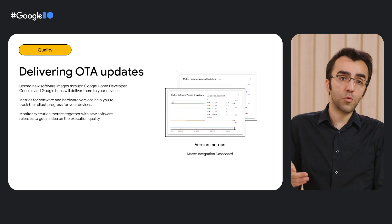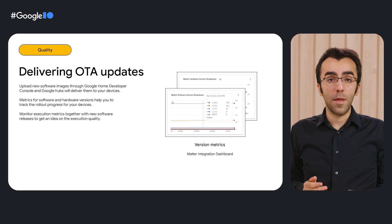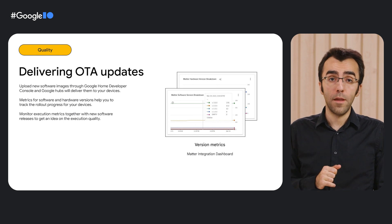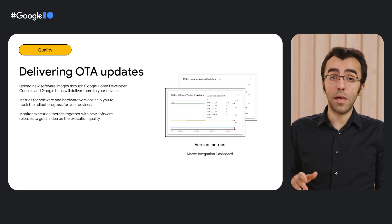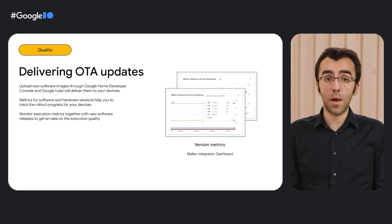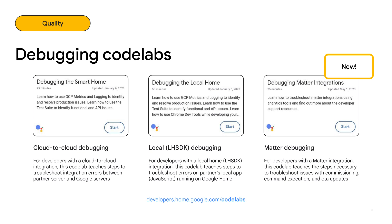And finally, you'll want to be able to issue over-the-air updates to your devices through Google and monitor the rollout process. You do this by uploading the images and starting the rollout from the Developer Console. We created a set of metrics that let you track the software and hardware versions of your devices in the field — so once you release a new update, you can check these numbers to get an idea on the rollout progress. That covers what's new on the Matter side. We focused on the Debugging Matter Integrations codelab, and similarly we have codelabs for cloud and local projects. You can access all of these and more through developers.home.google.com/codelabs.